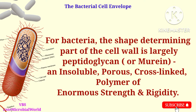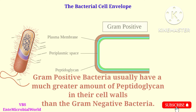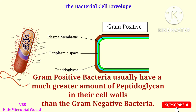For bacteria, the shape-determining part of the cell wall is largely peptidoglycan, an insoluble porous cross-linked polymer of enormous strength and rigidity. Gram positive bacteria usually have a much greater amount of peptidoglycan in their cell walls than gram negative bacteria.